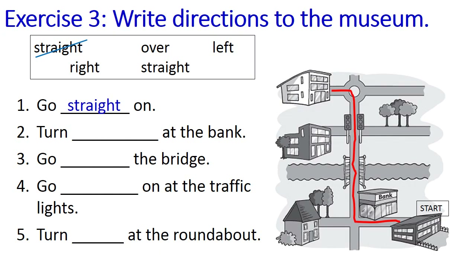Here are the answers. One: go straight on. Two: turn right at the bank. Three: go over the bridge. Four: go straight on at the traffic lights. Five: turn left at the roundabout. Are you correct?